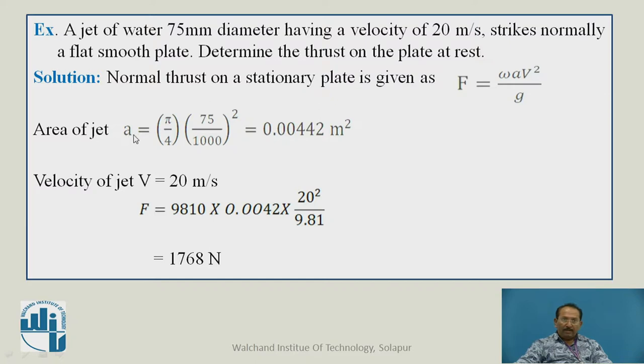So area of jet equals πd²/4 equals π times (75/1000)² equals 0.00442 m². It is 75 millimeter, that's why divided by 1000, converted into meter.